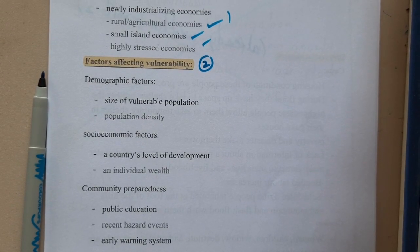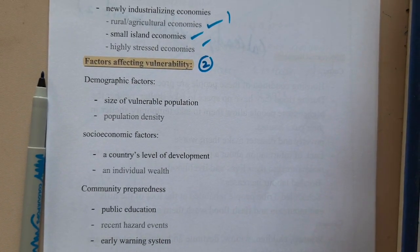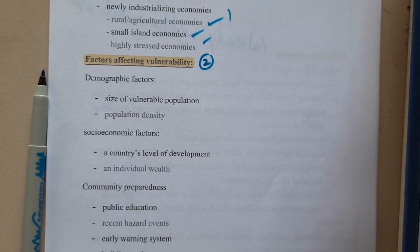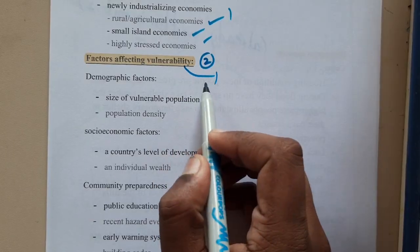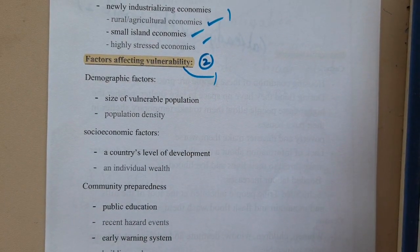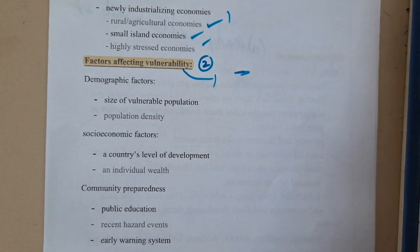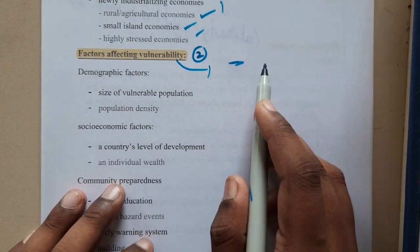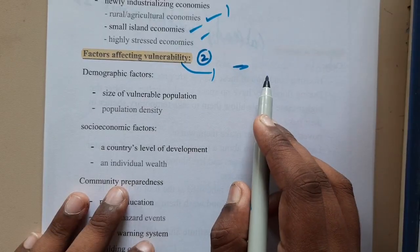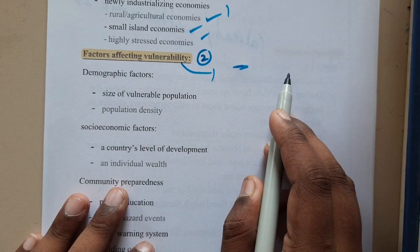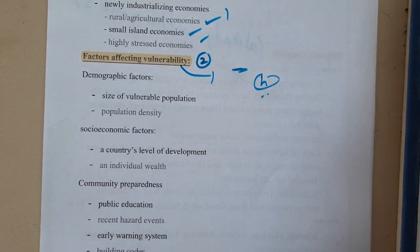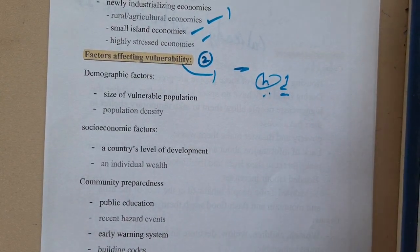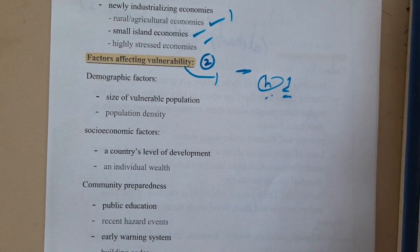Hello guys, we are back with our next lecture. In this lecture, let us go through the factors affecting vulnerability. Vulnerability refers to the degree to which a community, infrastructure, service, or geographical area is likely to be damaged by a particular hazard or disaster. We discussed vulnerability and its types in the first unit.